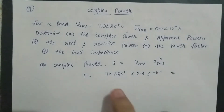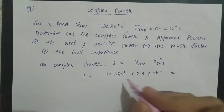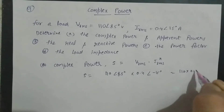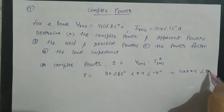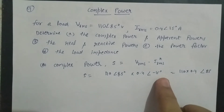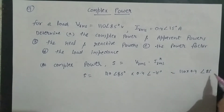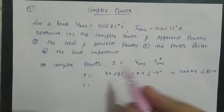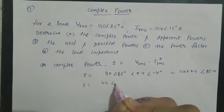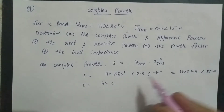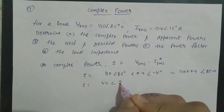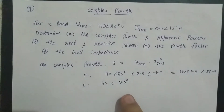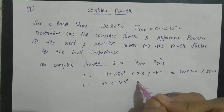अब multiply करते हैं: 110 × 0.4 = 44, और angle add हो जाते हैं तो 85 + (−15) = 70°। तो S = 44∠70° volt-ampere।